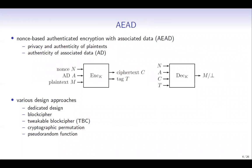This talk is about nonce-based authenticated encryption with associated data, or AEAD. This is used for privacy and authenticity of plaintexts, and for authenticity of associated data, or AD. The encryption takes a nonce, AD, and the plaintext M as input, and returns a ciphertext C and the tag T. The decryption takes N, A, C, and T as input, and returns the plaintext M or the reject symbol.